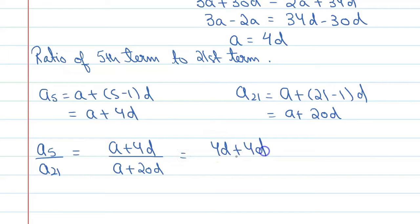In above we say a is equal to 4d here, so put this value. You can say 4d plus 4d upon 4d plus 20d. Here you will get 8d upon 24d, so d and d will get cancelled and you will get 1 upon 3.